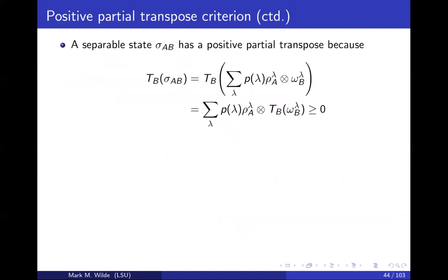What is the PPT criterion? Let's observe this: every separable state has a positive partial transpose. Why? Let's just act with the transpose. Here's the transpose on the outside, sigma is the separable state so it can be written like this. Transpose is a linear map, it can come inside the sum, and it acts on Bob's system.